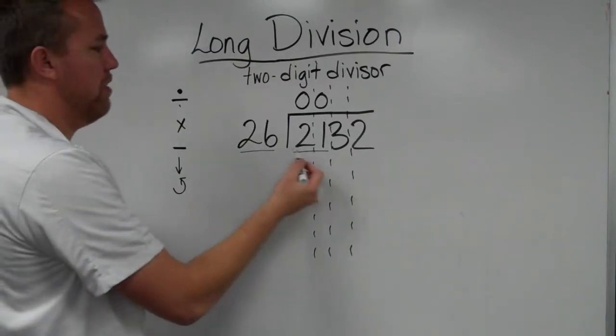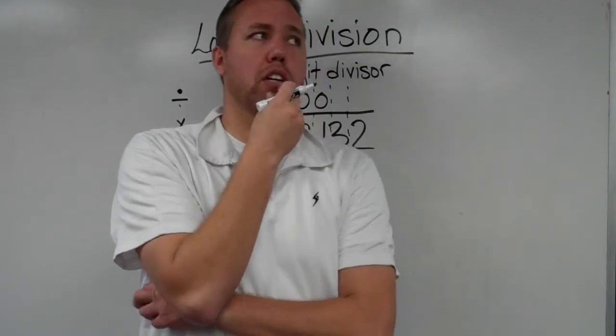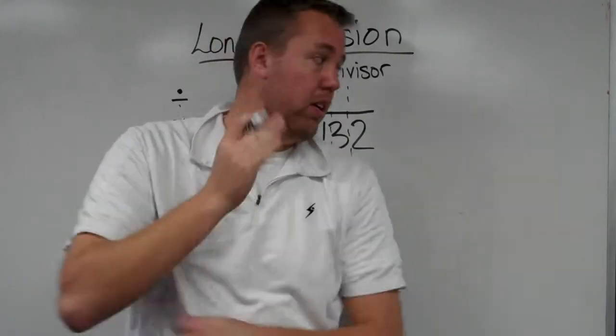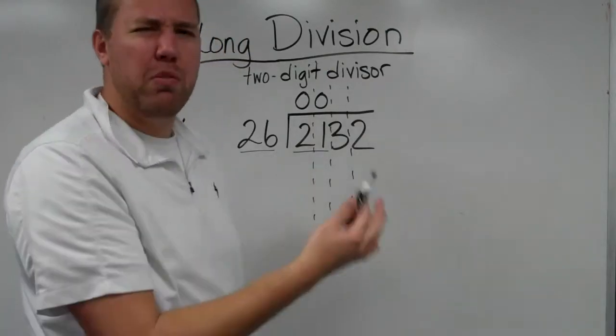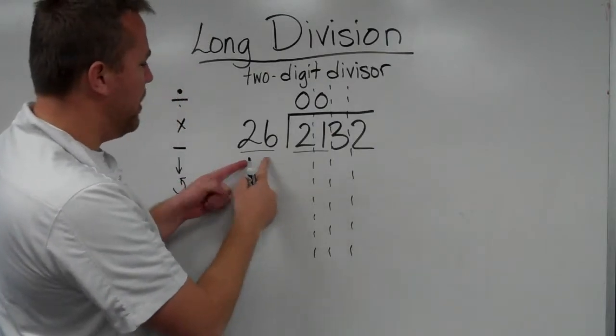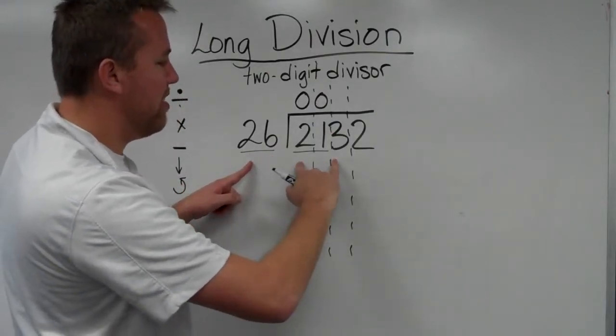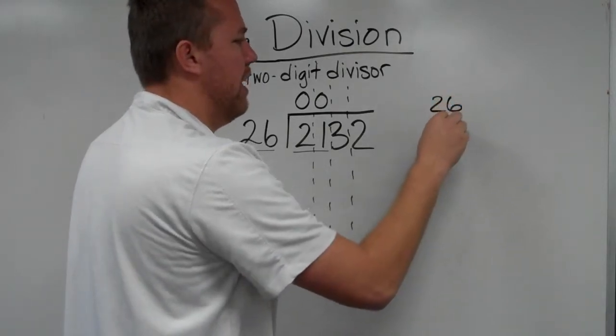Now 26 goes into 213. Daddy sometimes might be a little stumped, so mommy helps him out because he doesn't know exactly how many times. Being smart as we are, we start multiplying. Let's say maybe, well, 26 times 10 is 260 and it's a bit aways from that. So maybe I'll try 26 times 7.